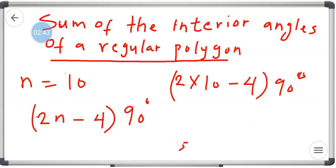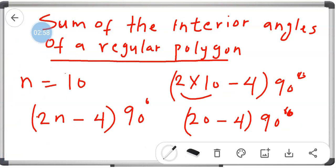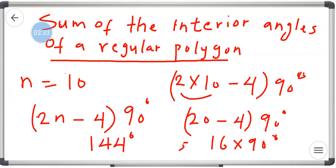From here, 2 multiplied by 10 is 20, minus 4, times 90°. So 20 minus 4 is 16. Then 16 multiplied by 90° gives us 1440°. So 1440° is the final answer to that question.